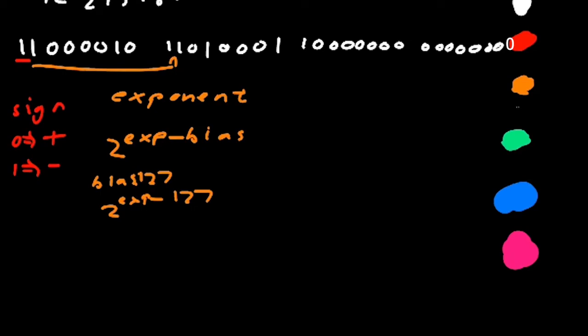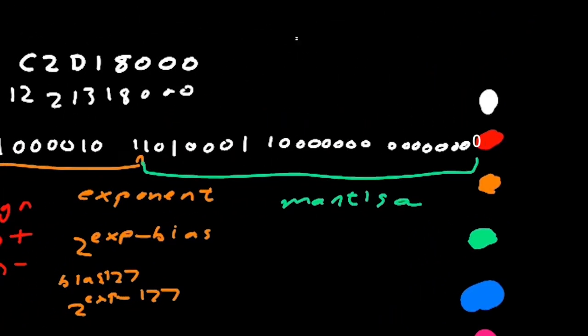And the remaining 23 bits is the mantissa. The mantissa is the value of the number. And now, in scientific notation, we have 4.392 times 10 to the 7. In this, 7 is the exponent, while 4.392 is our mantissa.